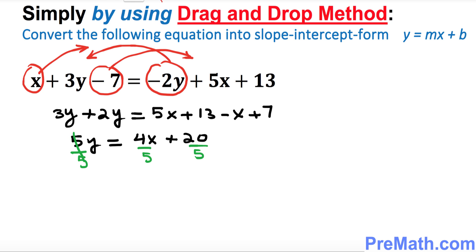This 5 cancels out. So what we got? y equals to 4/5 times x plus 4, and that is your final answer.